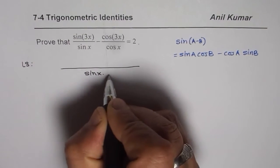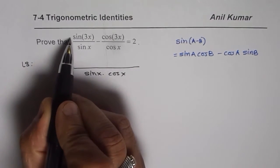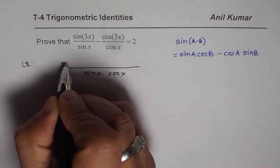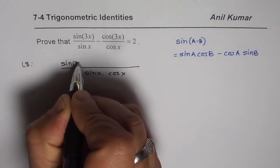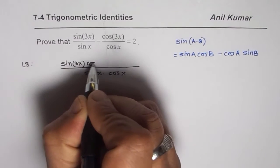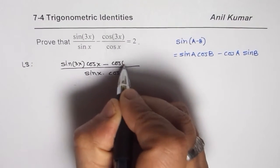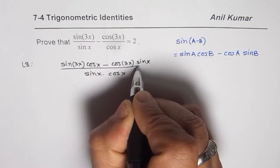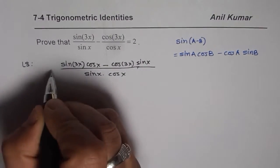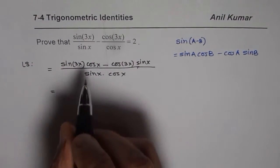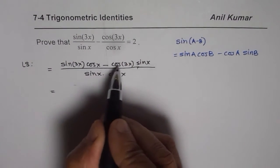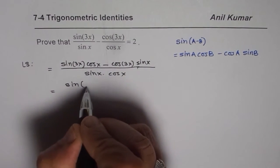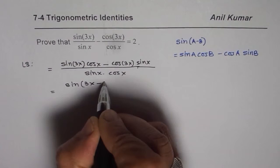So, we can write this as sin(3x)cos(x) - cos(3x)sin(x). That is correct. Now, if you see the formula, how can you write this? Sin(A)cos(B) - cos(A)sin(B), right? So, I could write numerator as sin(3x - x). Perfect.